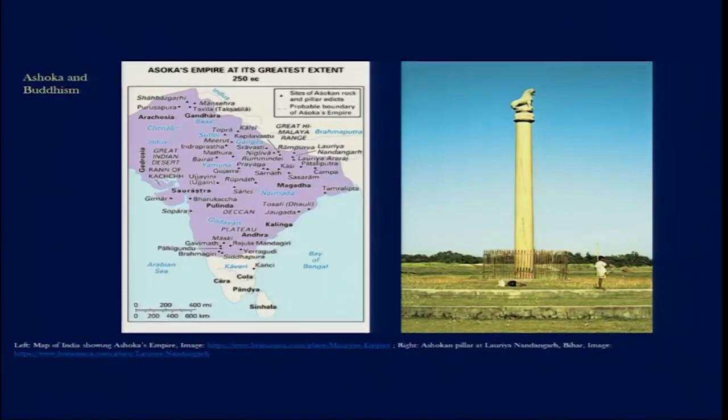Throughout his kingdom, Ashoka started installing different edicts carved on stone surfaces. Where stones were not available, he installed capitals or pillars — what we famously know today as the Ashokan pillars. Those pillars became synonymous with Ashoka's embracing of Buddhism and spreading the path of righteousness preached by Gautama Buddha. We can see on the map many sites where Ashokan rock pillars and edicts are found.